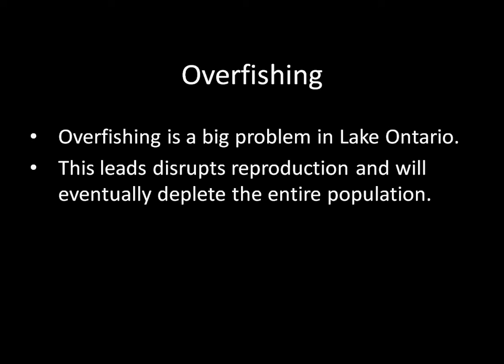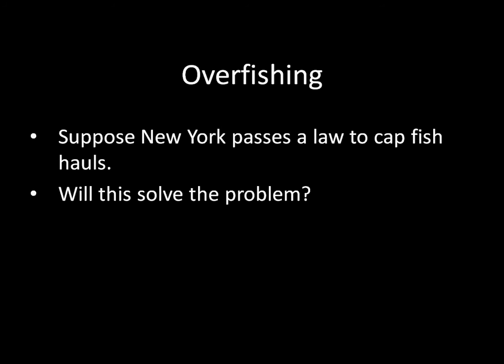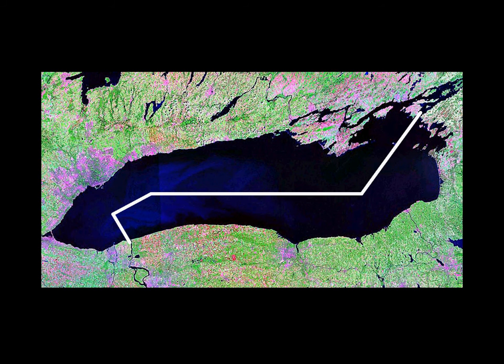You might think that the solution to overfishing is to simply pass legislation. Suppose that New York passed a law that capped the amount of fish that a boat coming into a New York port can have. Will this solve the problem? You might initially think of course this will solve the problem — New York is limiting how many fish boats are capturing. But the issue is that fish tend not to follow international borders. This is the international border between Canada and New York that I've drawn roughly into the map right there. These are imaginary lines — fish pay no attention to these lines whatsoever.